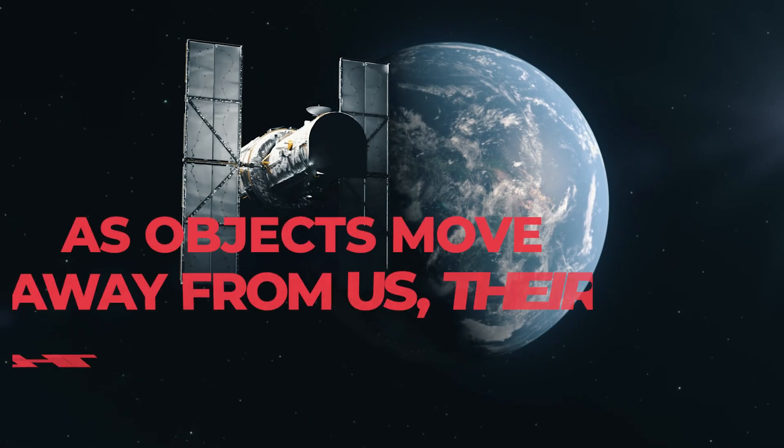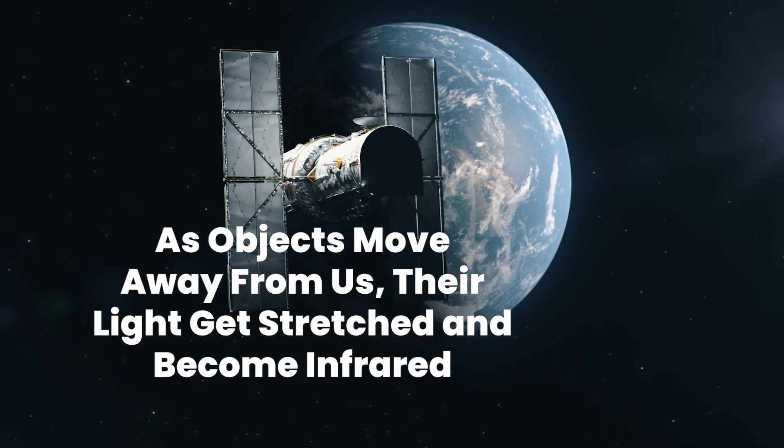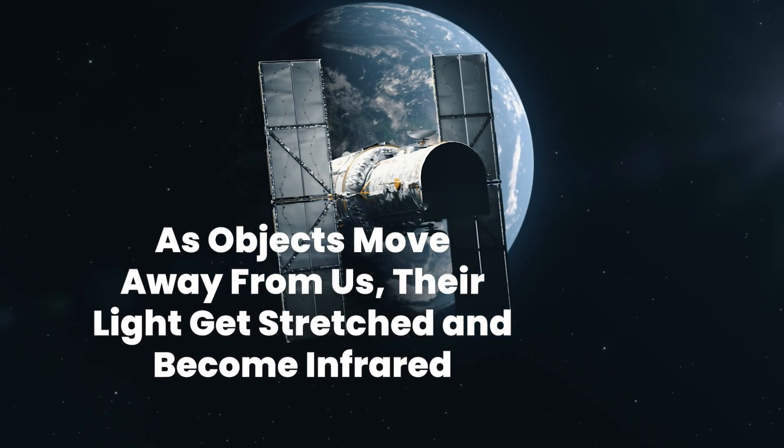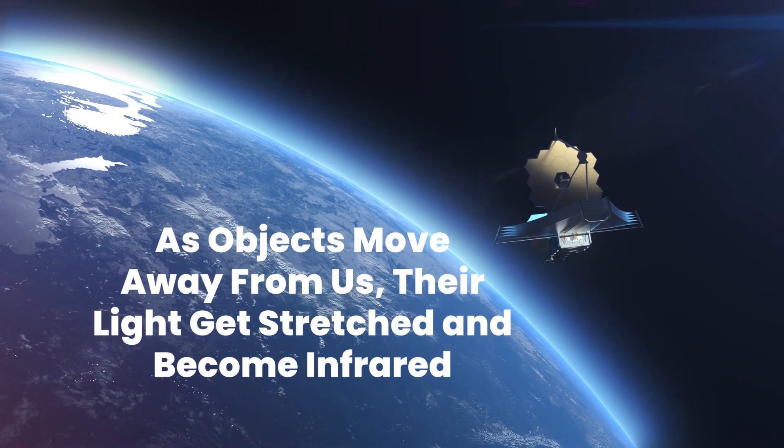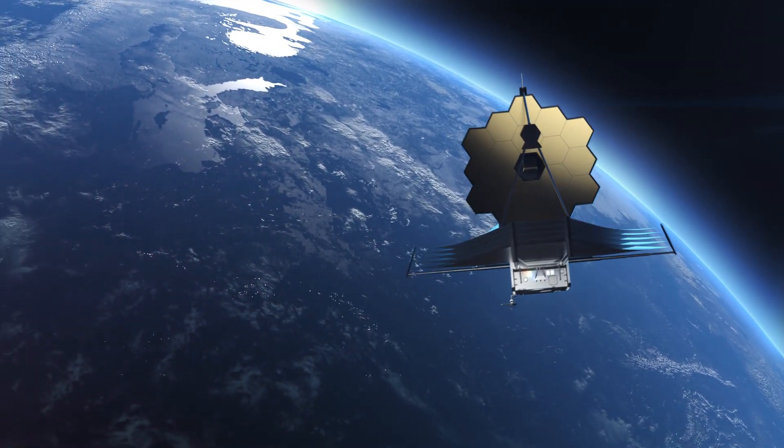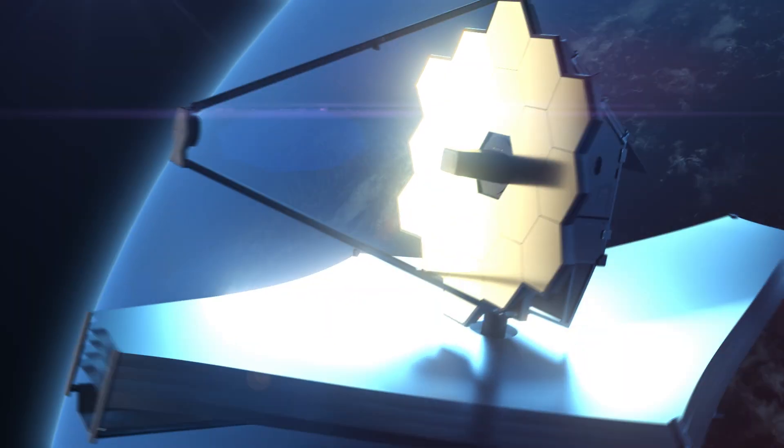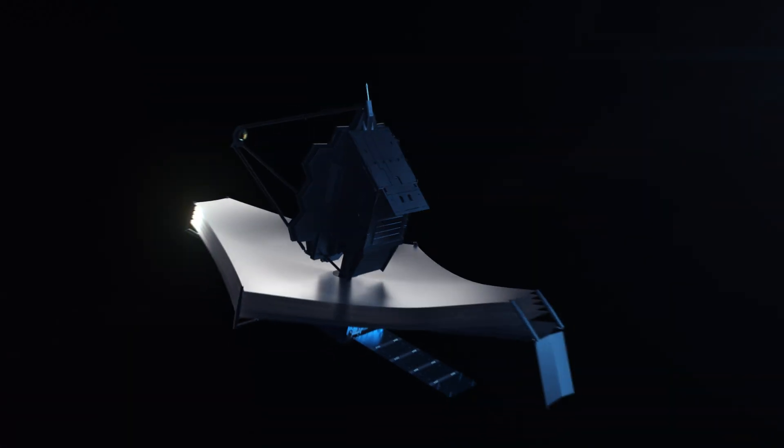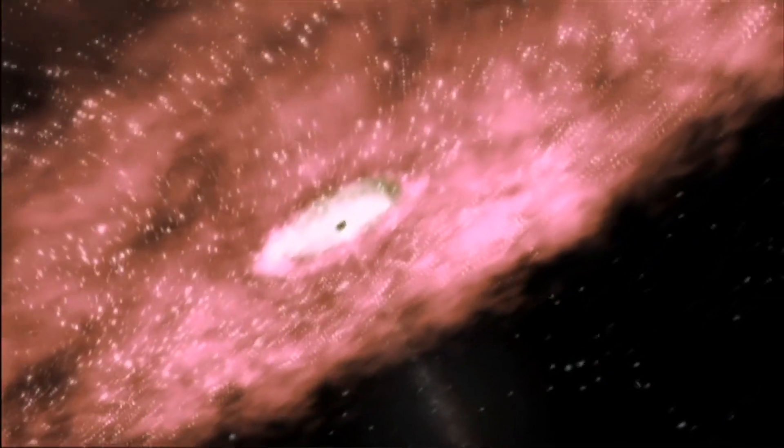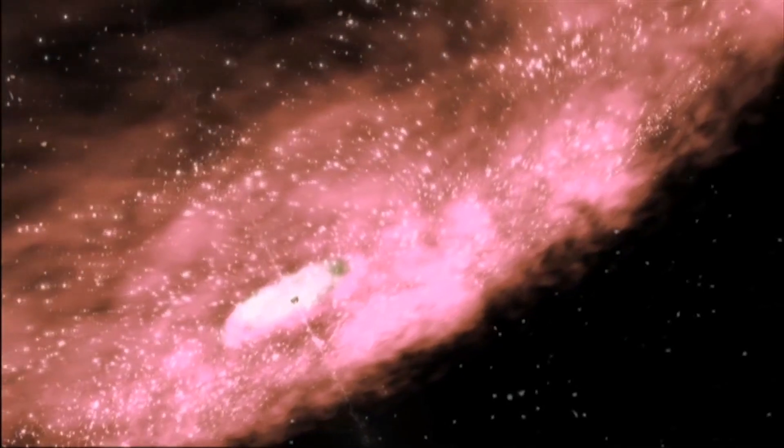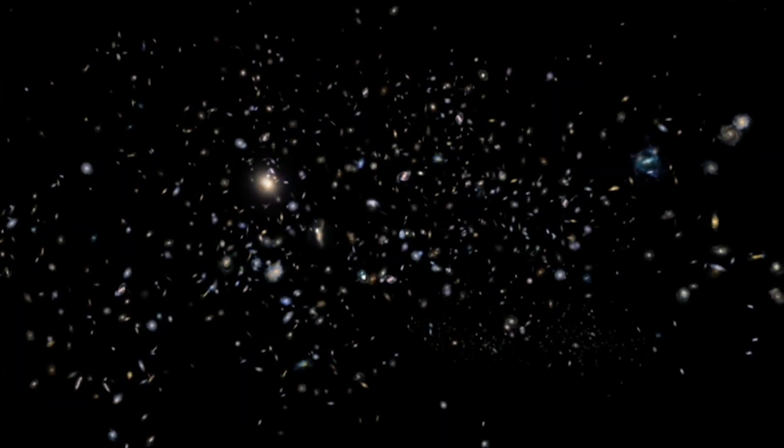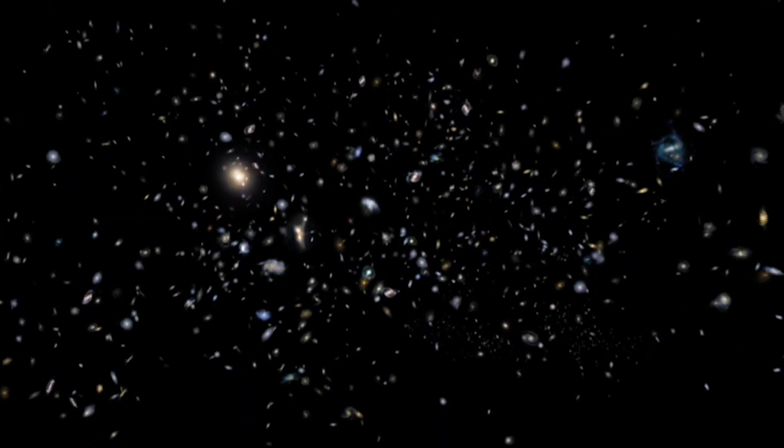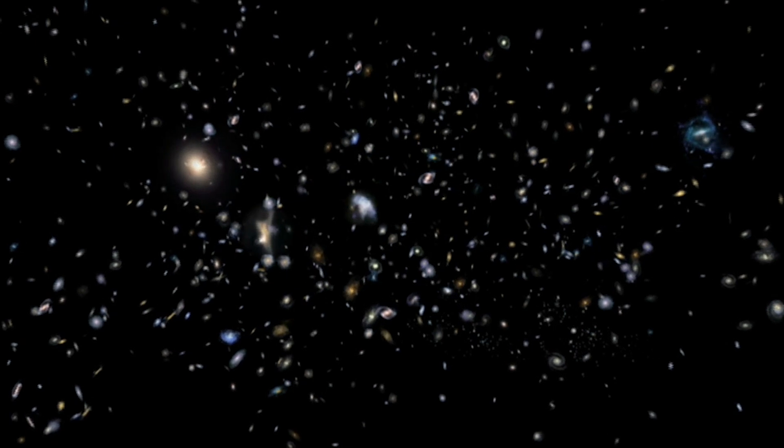Here's the fascinating part. As objects move away from us, their light gets stretched, eventually becoming infrared. The James Webb Telescope excels at detecting this extremely redshifted light, allowing us to observe objects billions of light years away. Since light takes time to travel, observing a distant galaxy with the James Webb Telescope means glimpsing how it appeared billions of years ago, providing insights into the early universe's dynamics and evolution.